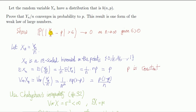...some epsilon bigger than zero, any epsilon bigger than zero, tends to zero as n tends to infinity.